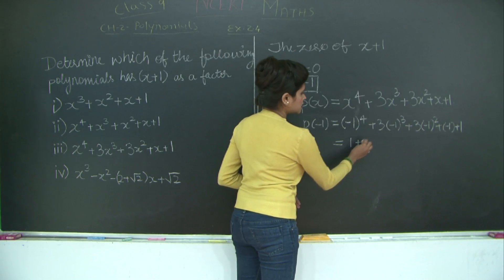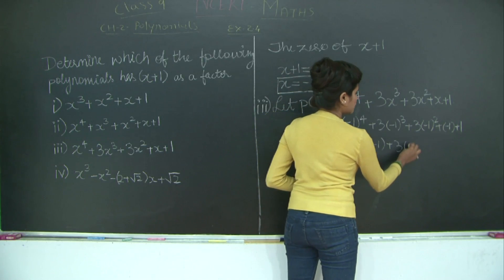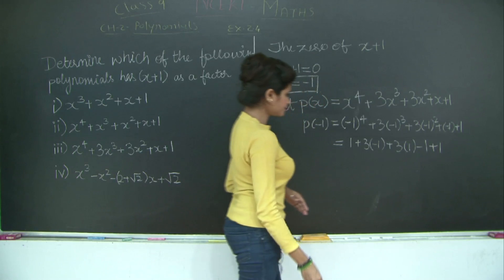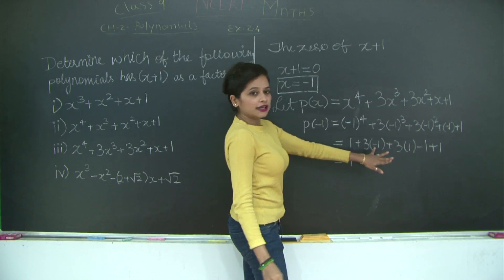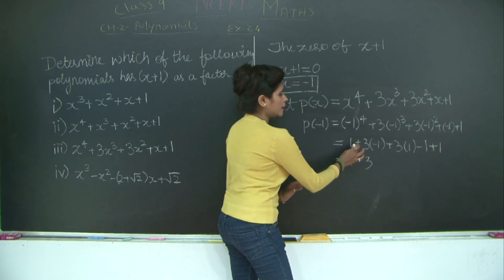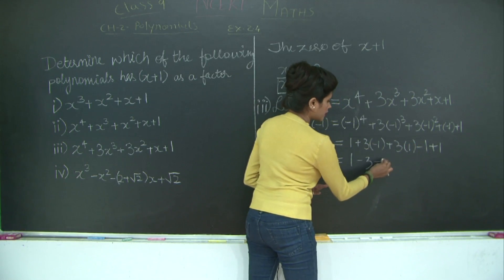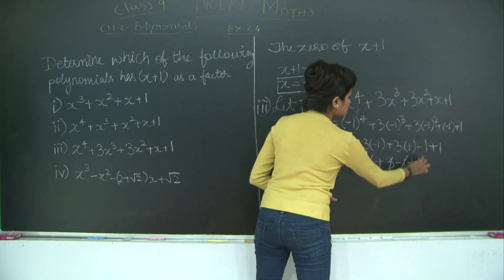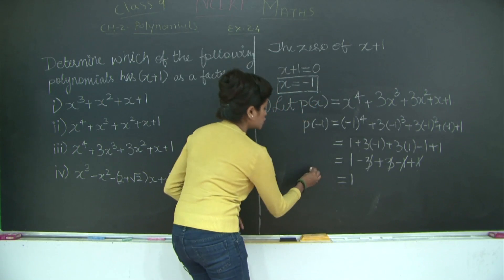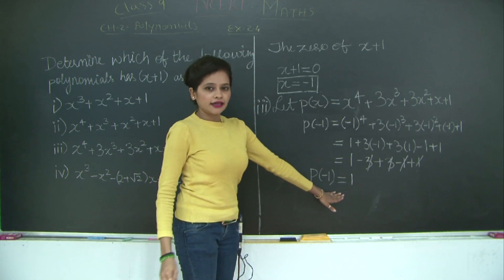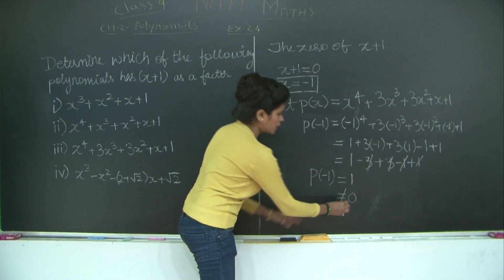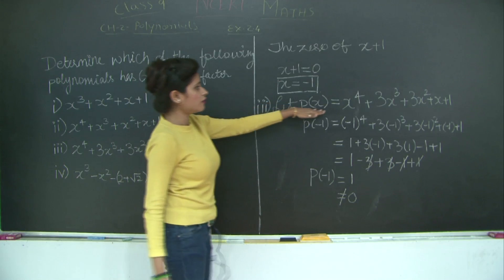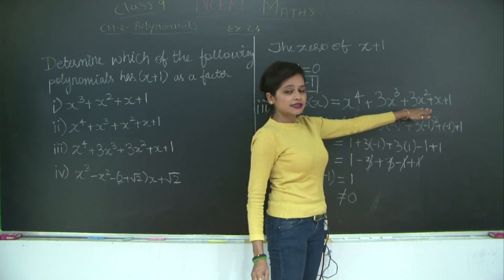Substituting gives us: 1 plus 3 times minus 1 plus 3 times 1 plus minus 1 plus 1. This simplifies to 1 minus 3 plus 3 minus 1 plus 1. Minus 3 and plus 3 cancel out, and plus 1 and minus 1 cancel out, leaving 1. So p of minus 1 equals 1, which is the remainder and is not equal to 0. Therefore, x plus 1 is not a factor of the polynomial x⁴ + 3x³ + 3x² + x + 1.